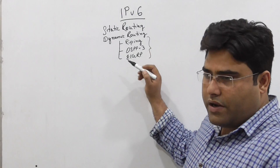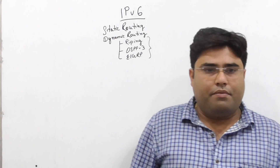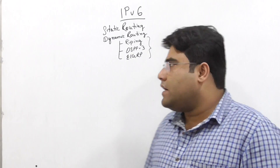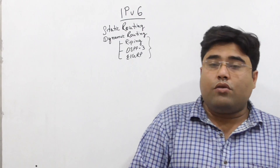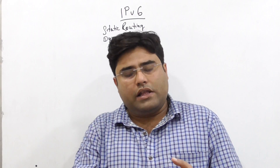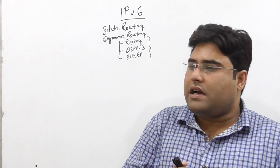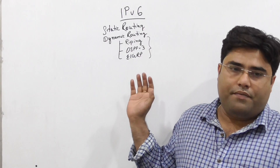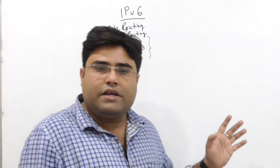We will do RIPng, and in this protocol we will change the properties that are similar to IPv4 — like Hello Timer, Dead Interval Timer, Neighbor Relationship Formation Conditions, Failover Conditions, and Convergence — with minor changes to support IPv6.